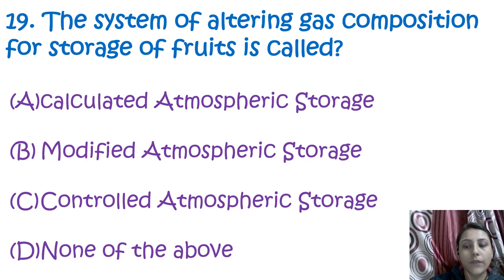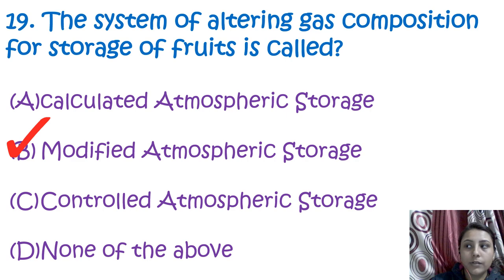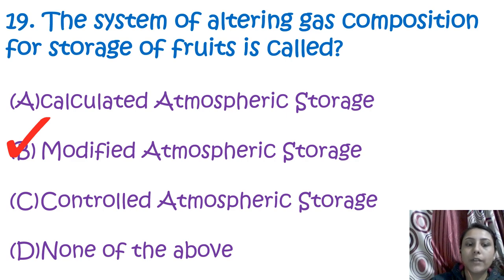The next question is: what is the substance used for altering gas composition for storage of fruit? It is known as modified atmospheric packaging. In modified atmospheric packaging, other gases like carbon dioxide and nitrogen are flushed in and oxygen is removed, making it an appropriate method for the preservation of food.